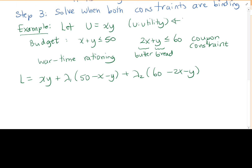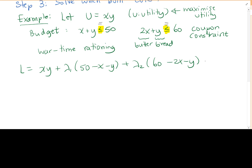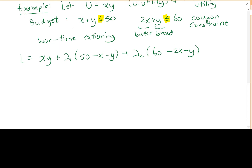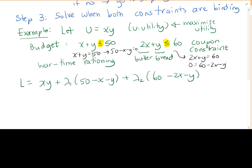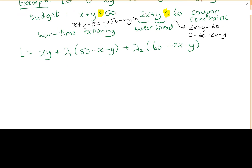Note we want to maximize the utility. For now, we treat the inequality symbols as equals, and test for that later. So we let x + y = 50, giving 50 − x − y = 0, and 2x + y = 60, giving 60 − 2x − y = 0, and plug both constraints into our Lagrange function.